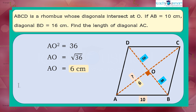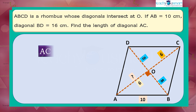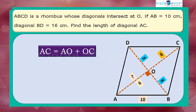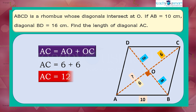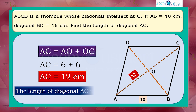Also, the length of OC is 6 centimeters. Therefore, the length of diagonal AC equals AO plus OC: AC equals 6 plus 6, that is AC equals 12 centimeters. Therefore, the length of diagonal AC is 12 centimeters.